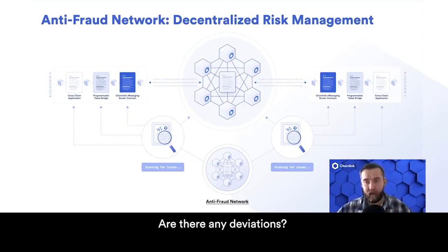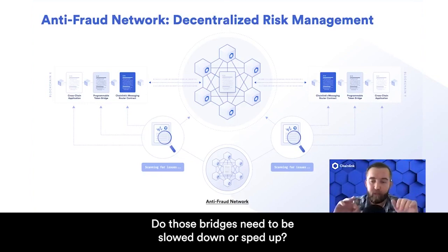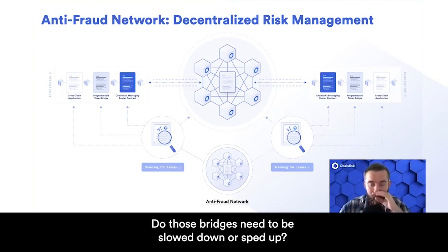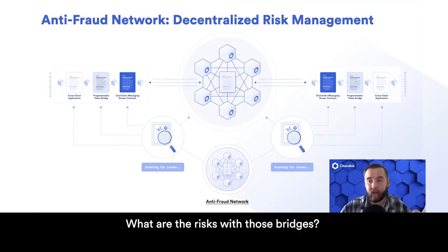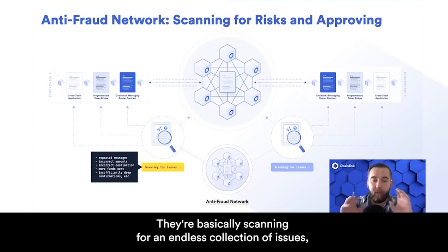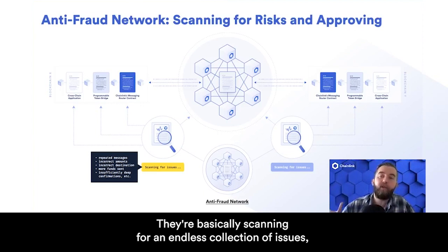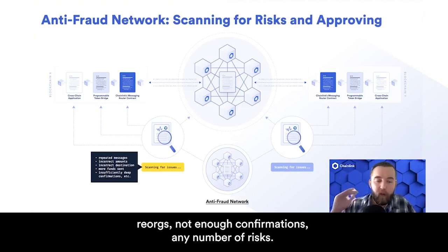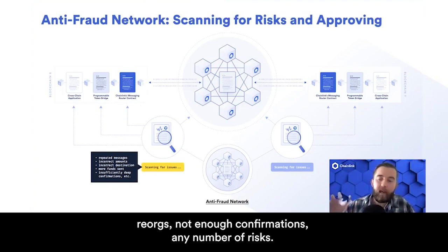Are there any deviations? Do those bridges need to be slowed down or sped up? What are the risks with those bridges? They're basically scanning for an endless collection of issues — reorgs, not enough confirmations, any number of risks.